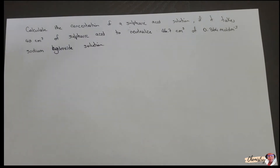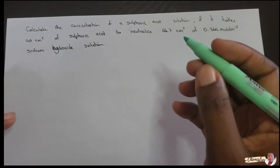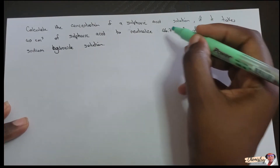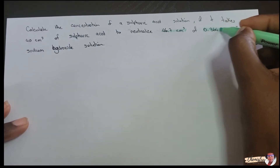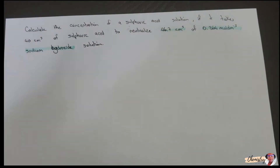I'm going to highlight our standard with green and highlight our analyte with pink. Remember, our standard is the one with an accurately known concentration and volume — the solution that gives both the concentration and the volume — and that would be our sodium hydroxide: 46.7 cm³. In this question we only have the volume of our sulfuric acid, so we know that's going to be our analyte.